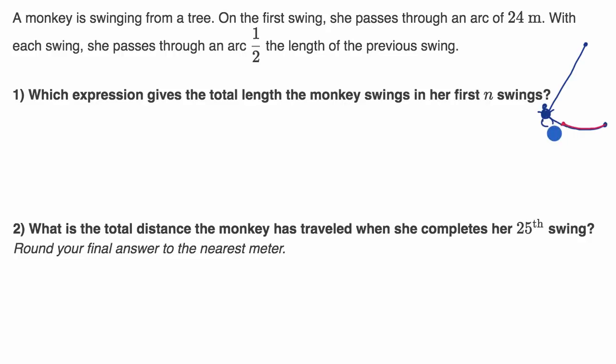And then on the next swing, she would swing half of that, which would be six meters. And so she might swing like this. And that makes sense. That's consistent with our experiences swinging from trees for those of us who've done that.